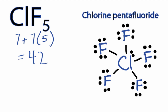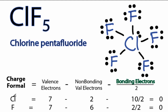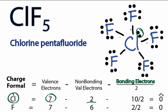At this point, we should check the formal charges to see if this is the best structure for ClF5. For chlorine, we look on the periodic table and it has 7 valence electrons. Here in our Lewis structure, 2 of those are non-bonding, and 2, 4, 6, 8, 10 are bonding — we'll divide that by 2. So 7 minus 2 minus 5 gives 0 as the formal charge for chlorine.